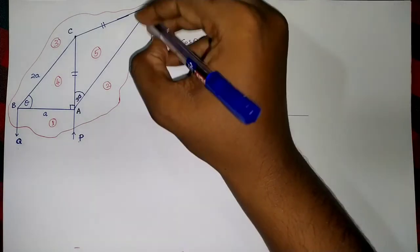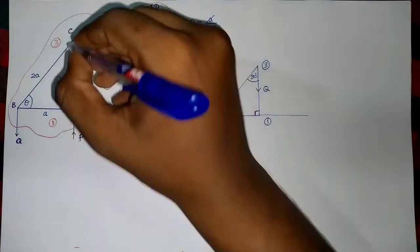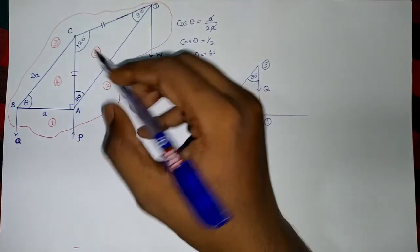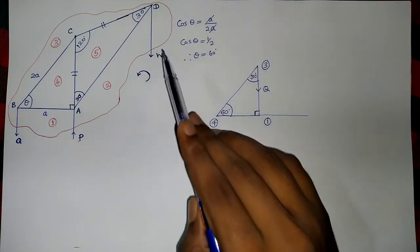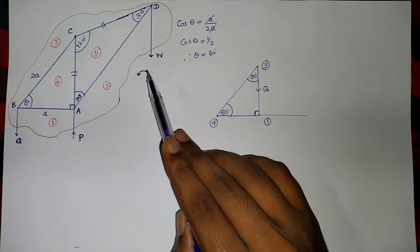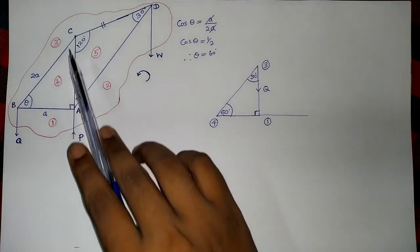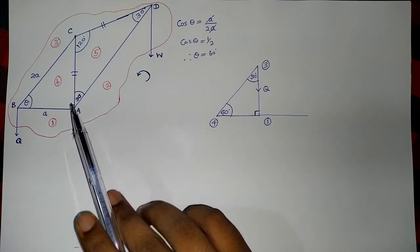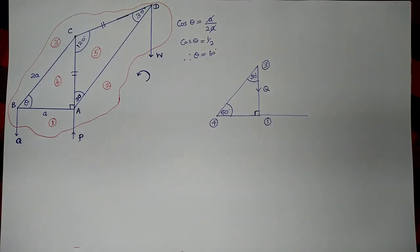AC equals CD — they are equal. The angle CAD is 30 degrees. Since this is an isosceles triangle, this angle is also 30, making this 120, because the sum of interior angles of a triangle is 180. A load of weight W hangs at D. The framework is in equilibrium in a vertical plane with AB horizontal and AC vertical, supported by vertical forces P and Q acting at A and B respectively.